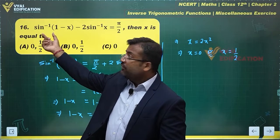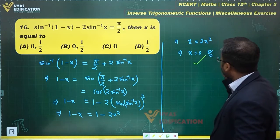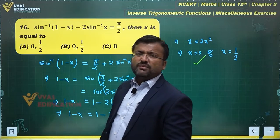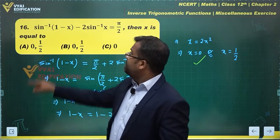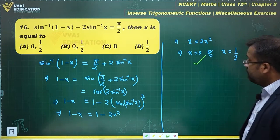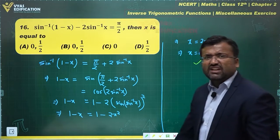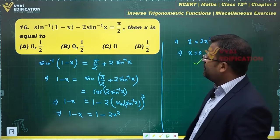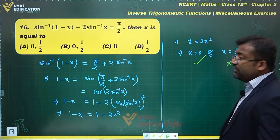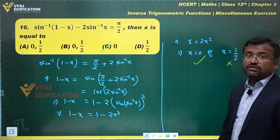For x = 0: sin⁻¹(1) - 2sin⁻¹(0) = π/2 - 0 = π/2. So x = 0 is valid. For x = 1/2: sin⁻¹(1/2) = π/6, and 2sin⁻¹(1/2) = π/3. Then sin⁻¹(1/2) - π/3 = π/6 - π/3 = -π/6, which is not equal to π/2. Therefore x = 1/2 is not correct. The correct answer is only x = 0, which is option C.